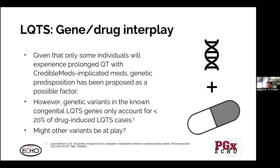Given that only some individuals experience prolonged QT with a QT-prolonging medication, there has been thought that some genetic predisposition is at play — not everybody who goes on citalopram will have QT prolongation. However, genetic variants in definitive genes like KCNH2 and SCN5A account for less than 20 percent of drug-induced long QT cases, leaving 80 percent unexplained. Might there be other variants at play?